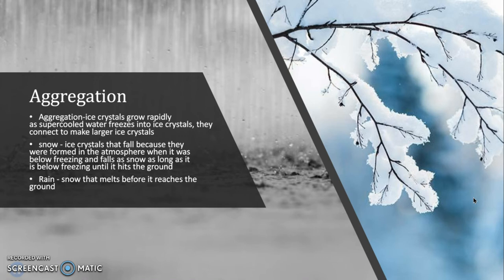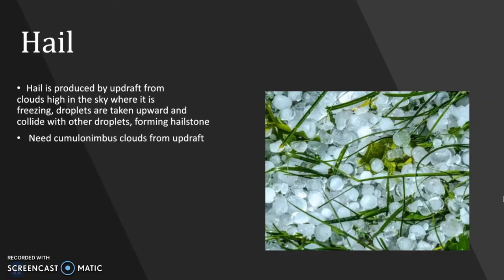Snow is the main form of precipitation created through aggregation. Ice crystals fall because they were formed in the atmosphere when it was freezing, and they will fall as snow as long as it remains below freezing until hitting the ground. If the atmosphere does not remain below freezing, the snow will melt before it reaches the ground and it will become rain.